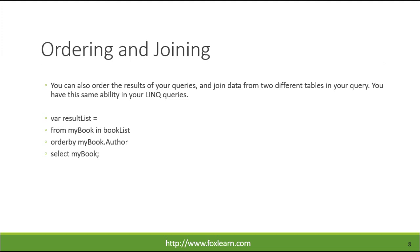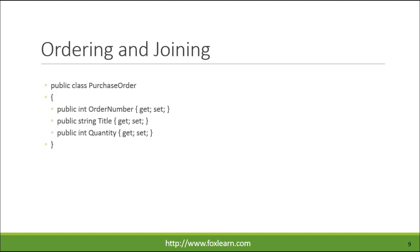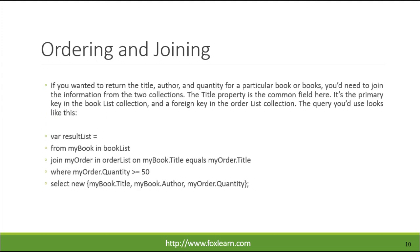You can also order the results of your queries and join data from two different tables in your query — you have this same ability in your LINQ queries. If you wanted to return the title, author, and quantity for a particular book or books, you'd need to join the information from the two collections. The title property is the common field here — it's the primary key in the book list collection and a foreign key in the order list collection.